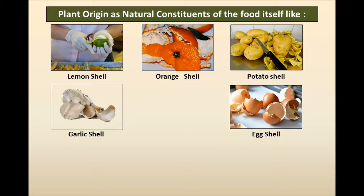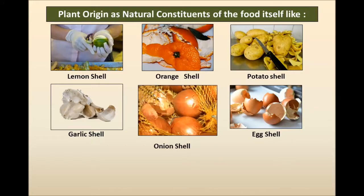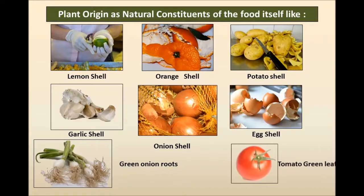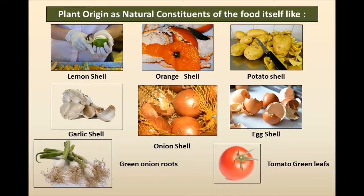Later we will explain how food industries can protect against eggshell contamination even in prepared pasteurized egg or albumin egg products. Other examples include onion shell, green onion roots — which are trimmed from the vegetable itself — and tomato green leaves. These are just examples to help understand what the plant origin actually means as a source of physical hazard.